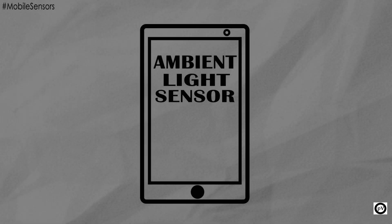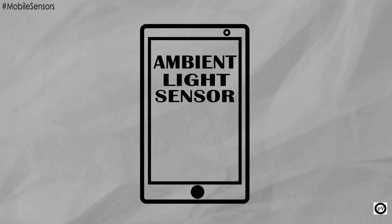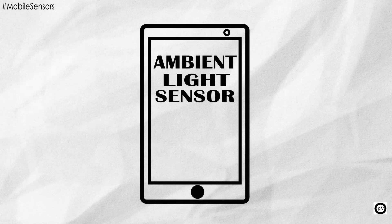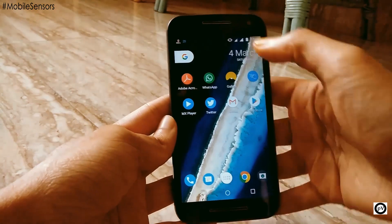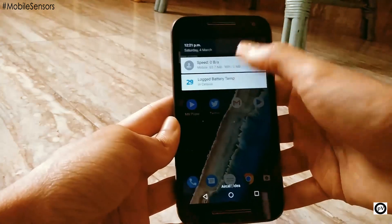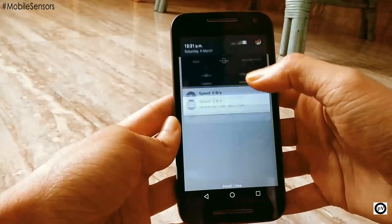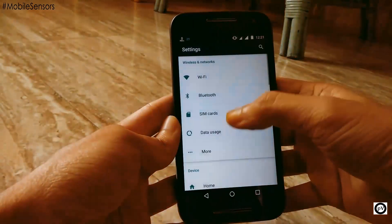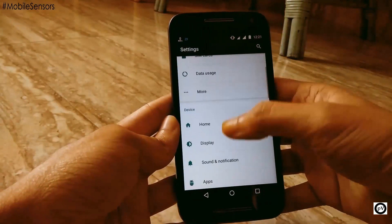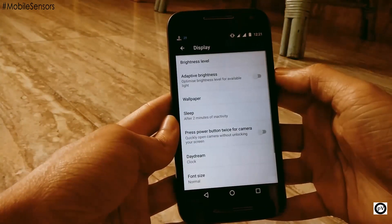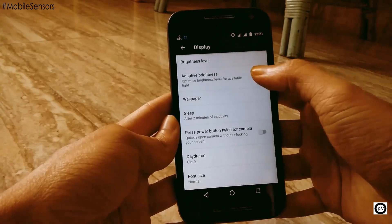Hello everyone, it's Paragian here. In this video I'll talk about a very popular sensor used in mobile phones, known as the ambient light sensor. An ambient light sensor helps to measure the amount of light in the surrounding and adjust the screen brightness accordingly.